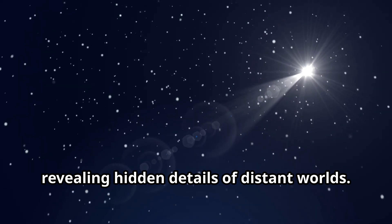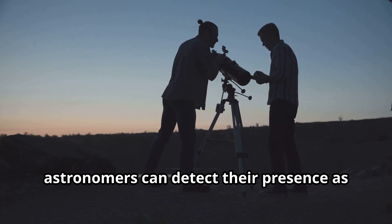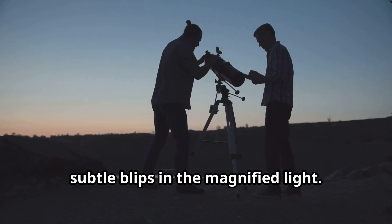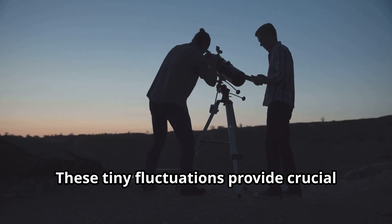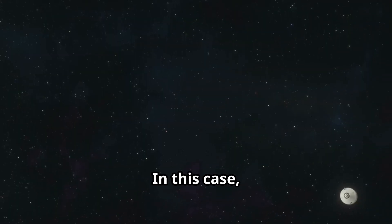If the foreground star happens to have planets orbiting it, astronomers can detect their presence as subtle blips in the magnified light. These tiny fluctuations provide crucial clues about the planet's existence and characteristics.